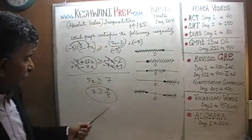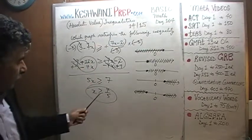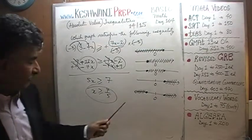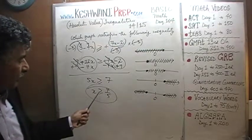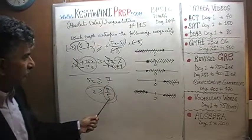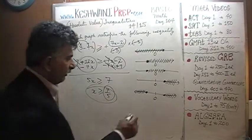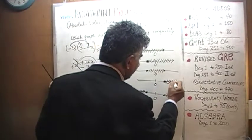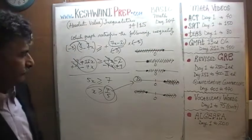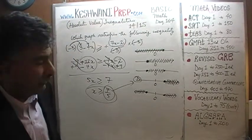Any value of x that is greater than or equal to 7/5 will satisfy this inequality. Looking at the five graphs, which one shows x has to be greater than or equal to some positive quantity? That's answer choice D — x has to be more than some positive quantity. The answer is D.